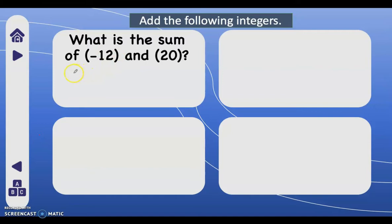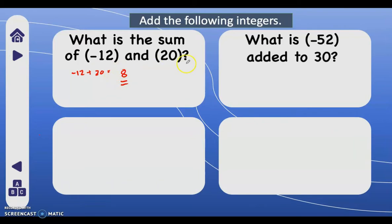Let's have more examples. What is the sum of negative 12 and 20? We write negative 12 plus 20 — these numbers are unlike sign, so we subtract: 20 minus 12, that is 8. Then copy the sign of the greater absolute value. The absolute value of negative 12 is 12, and the absolute value of 20 is 20. So 20 has a greater absolute value and the sign of 20 is positive, therefore our answer is positive 8.